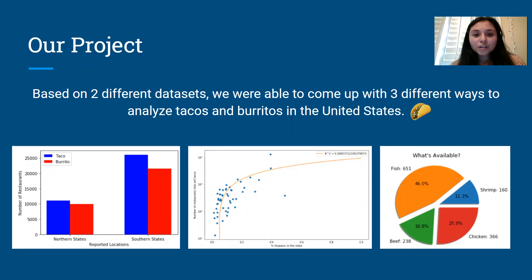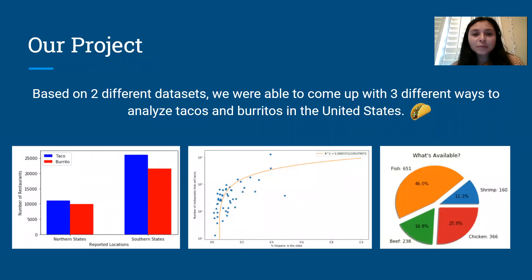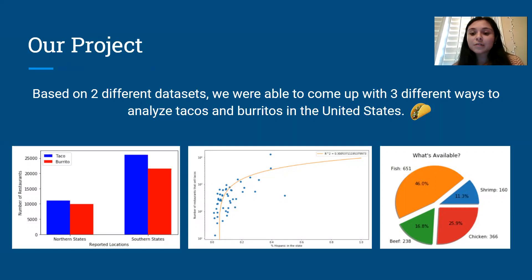For our project, our goal was to look at the tacos and burritos market. We took two different data sets and came up with different visualizations about tacos and burritos in the United States — things like the number of restaurants that sell tacos and burritos in northern versus southern states, ethnicities and races, the percentage in states that sell tacos and burritos, and what kinds of tacos are most versus least popular.